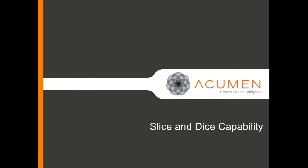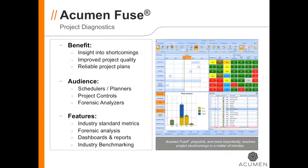One of the most unique and useful capabilities in Acumen Fuse is the Slice and Dice capability on the Schedule Diagnostics screen. This screen provides the ultimate level of information and flexibility when it comes to analyzing and scoring project quality, compliance, and performance information. Whether you want to analyze from top-down or work within the lowest levels of the schedule, you have that capability here.